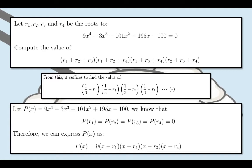Since we know that r sub 1, r sub 2, r sub 3, and r sub 4 are the roots to the equation, we know that P of r sub 1 equals P of r sub 2 equals P of r sub 3 equals P of r sub 4 equals 0.